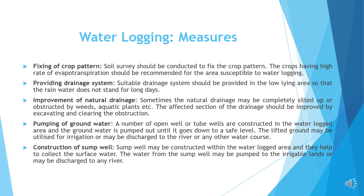Pumping of groundwater: A number of open wells or tube wells are constructed in the waterlogged area and the groundwater is pumped up until it goes down to a safe level. The lifted groundwater may be utilized for irrigation or may be discharged to the river or any other water course. Construction of sump wells: Sump wells may be constructed within the waterlogged area and they help to collect the surface water. The water from the sump well may be pumped to irrigable lands or discharged to any river.